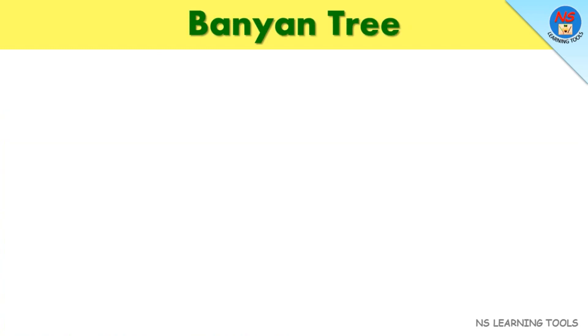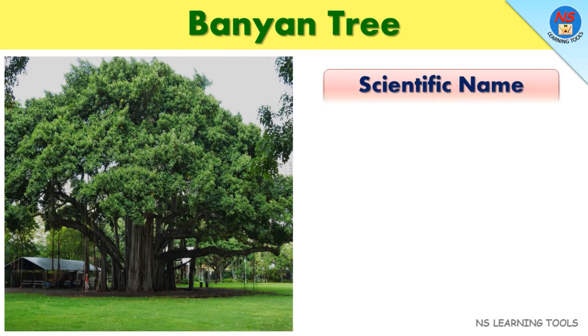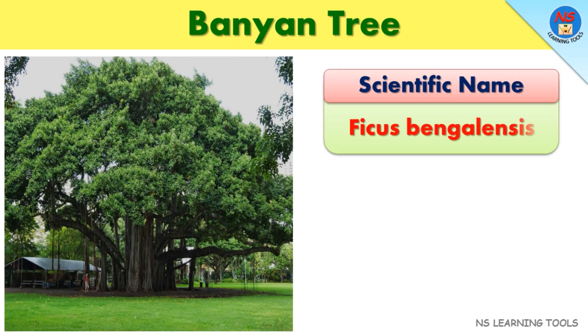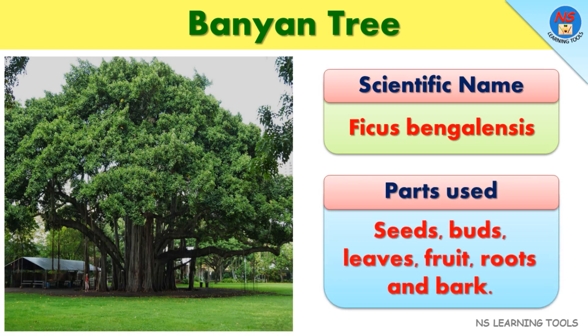Banyan tree. Scientific name: Ficus bengalensis. Parts used: Seeds, buds, leaves, fruit, roots and bark.